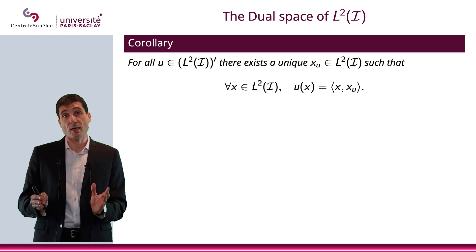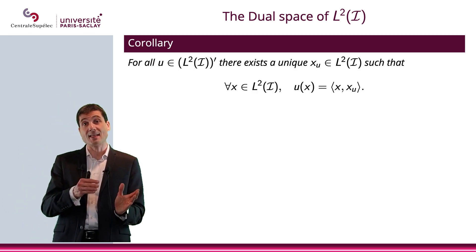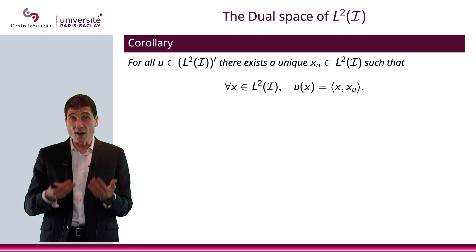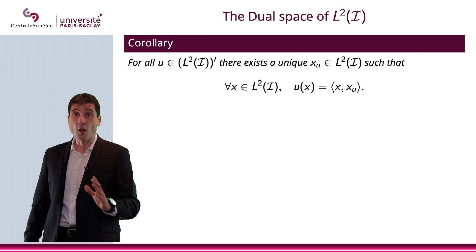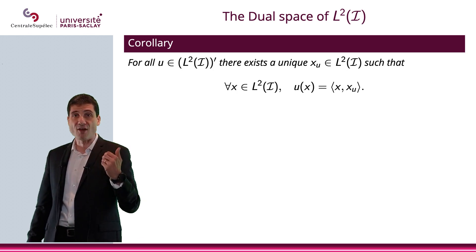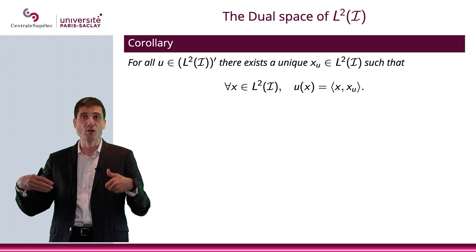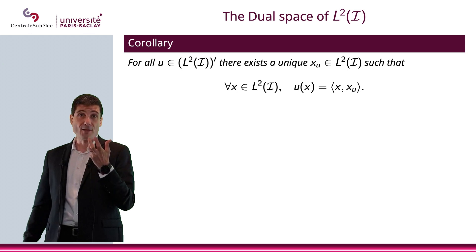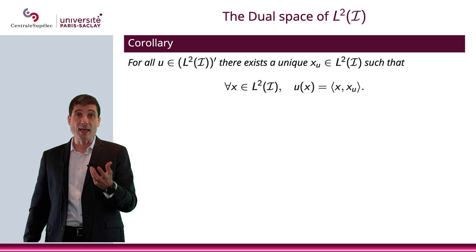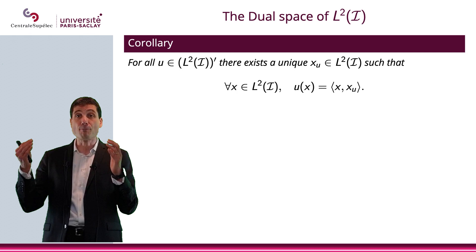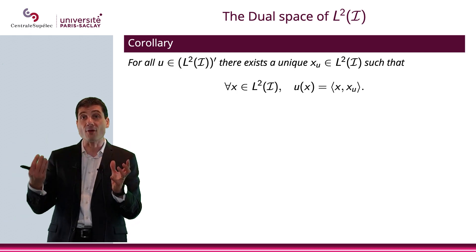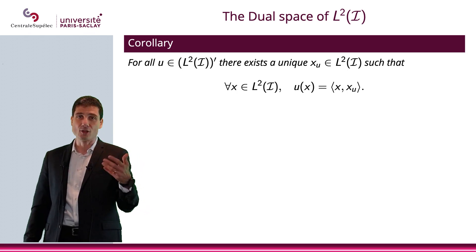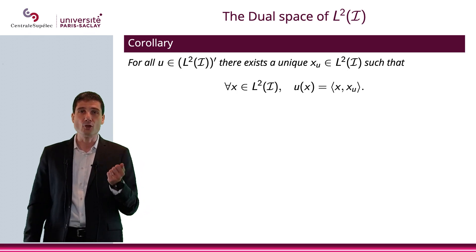When we do this, we can say: let's consider H as L2. As we know, L2 is a Hilbert space. Therefore, for all linear continuous functions going from L2 to R — in other words, for all elements in the dual space of L2 — that function can be represented as the inner product of x with a given x_u that represents that linear continuous function, that element of the dual space.